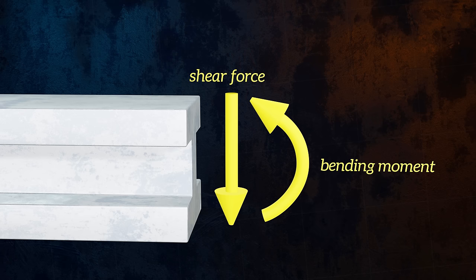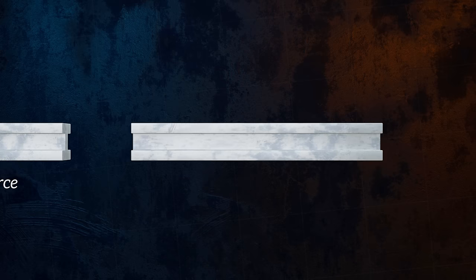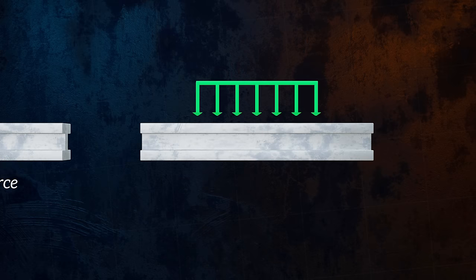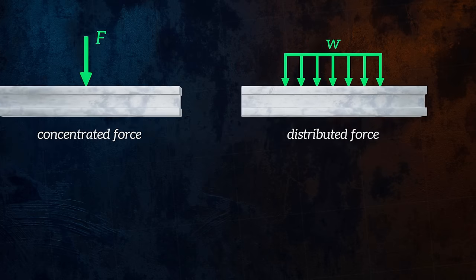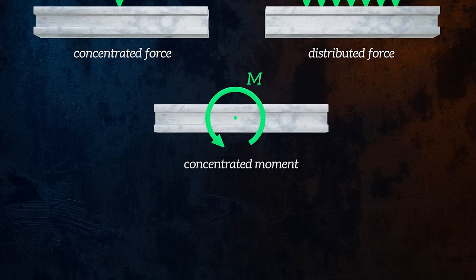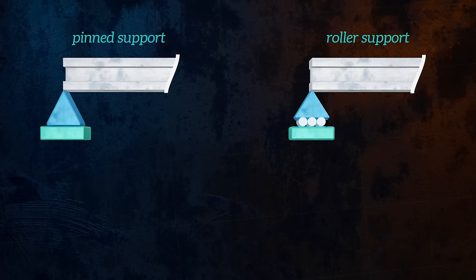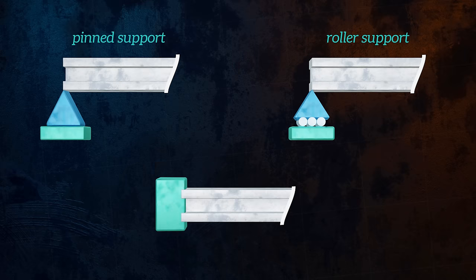Beams can be loaded in a number of ways, the most common being concentrated forces, distributed forces, and concentrated moments. Beams can also be supported in a number of different ways. They can have pin supports, roller supports, or be fully fixed, which each restrain the beam in different ways.